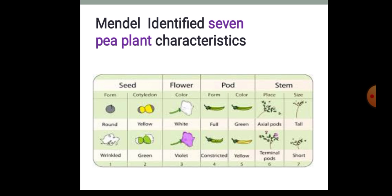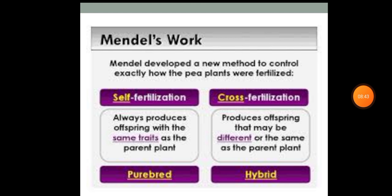These 7 pea plant characteristics are listed by Mendel. Mendel developed a new method to control exactly how the pea plants were fertilized — by using self-fertilization, which means we get a pure breed that always produces offspring with the same trait as the parent plant. He also made them undergo cross-pollination or cross-fertilization, which produces offspring that may be different from the parent plant.